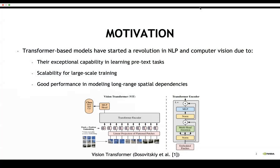Recently, transformer-based models have started a revolution in NLP and computer vision. They have gained a lot of attention due to their exceptional capability in learning pre-text tasks, their scalability for large-scale training, and their good performance in modeling long-range spatial dependencies.